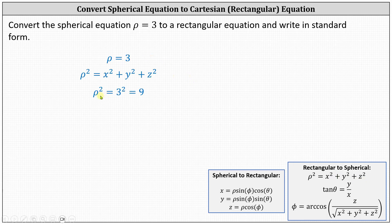If we have ρ = 3, ρ² = 3² or 9, giving us the rectangular equation 9 = x² + y² + z², which we normally switch around and write as x² + y² + z² = 9.